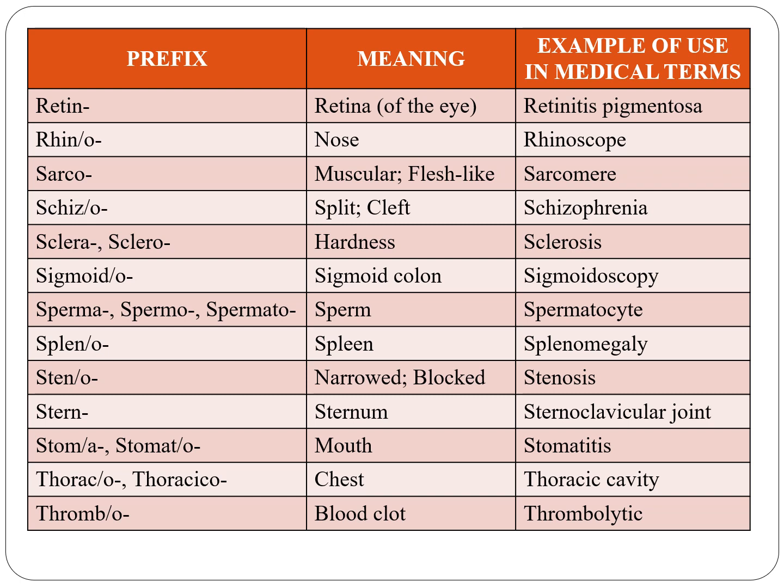Sigmoid indicates sigmoid colon, for example sigmoidoscopy. Sperma, spermo, and spermato indicate sperm, for example spermatocyte. Spleno indicates spleen, for example splenomegaly. Steno indicates narrowed or blocked, for example stenosis.